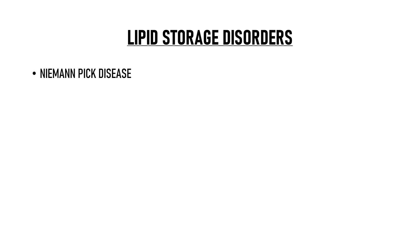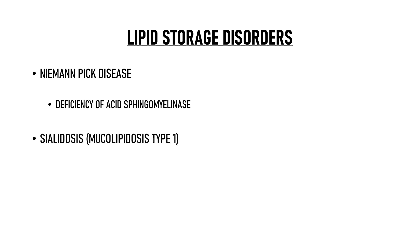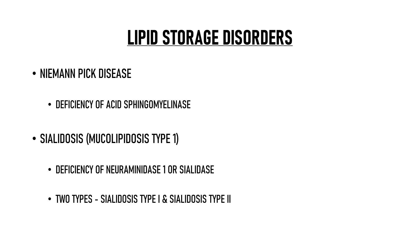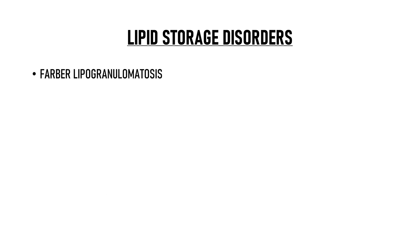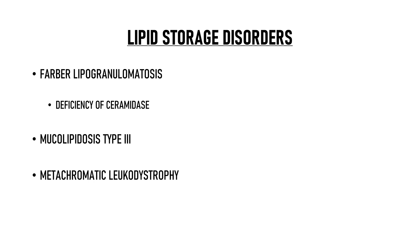Niemann-Pick disease is caused by deficiency of acid sphingomyelinase enzyme, which leads to accumulation of sphingomyelin in the tissues. There is also sialidosis, or mucolipidosis type 1, in which there is deficiency of neuraminidase 1 or sialidase enzyme. Two types have been described: sialidosis type 1 and sialidosis type 2. Sialidosis type 1 is also known as cherry red spot myoclonus syndrome. Other storage disorders with cherry red spot include Farber lipogranulomatosis, caused by deficiency of ceramidase, mucolipidosis type 3, metachromatic leukodystrophy, and galactosialidosis.